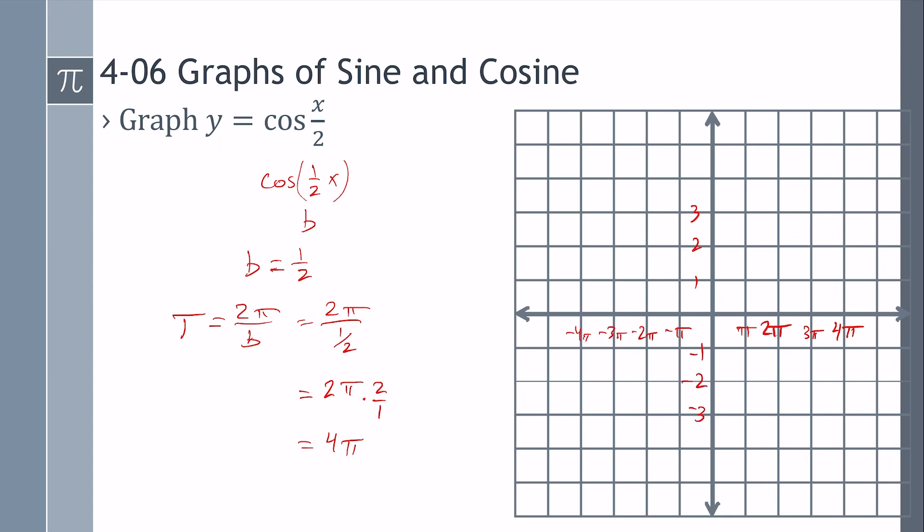All right, cosine starts at the amplitude, which is one in this case. And then at the period, it's back at the amplitude. Halfway in between, it's at a minimum. And halfway between those are the X intercepts.